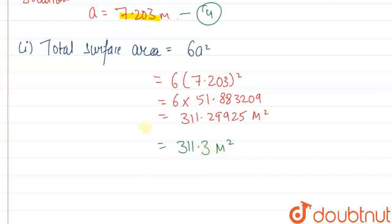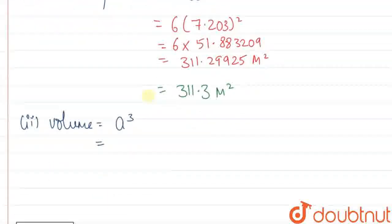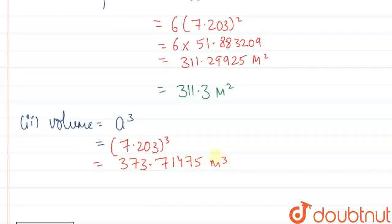Now we have to find the volume. The formula of volume is a³. Now we will put the value of a, that is 7.203 cubed. So it will be 373.71475 meter cube.